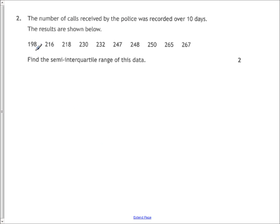This question, you've got a list of data, they've done you a favour, it's been put in order for you. All you have to do is find the semi and the quartile range. So identify the quartiles, the lower quartile, the upper quartile, work out the range between the two, and then semi divided by two. Straightforward, two marks, nothing to complain about so far.